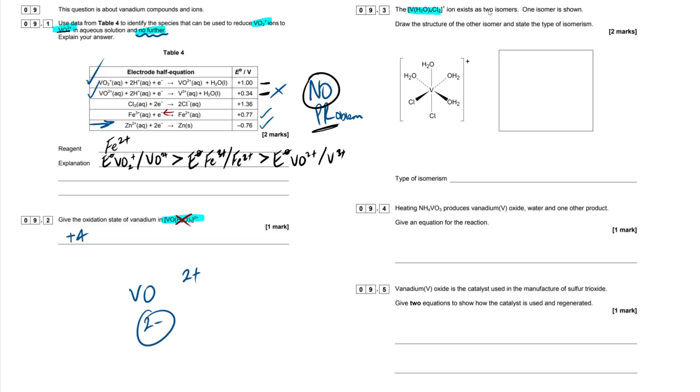Okay, 9.3 then. So we've got this complex right here and it exists as two isomers. One isomer is shown and we have to draw the structure of the other isomer and state the type of isomerism. So if you watched my other video on the isomers that exist, you should have known that it can't be optical here. We can get optical isomerism with octahedral complexes, but they have to be bidentate. Now, these are all monodentates, so it has to be cis-trans isomerism. And that's exactly what I'm just going to draw in right here. So we're going to have our V in the middle. We're going to have our bonds going off. And then we're going to have our molecules. So OH2, OH2, H2O, Cl, Cl.